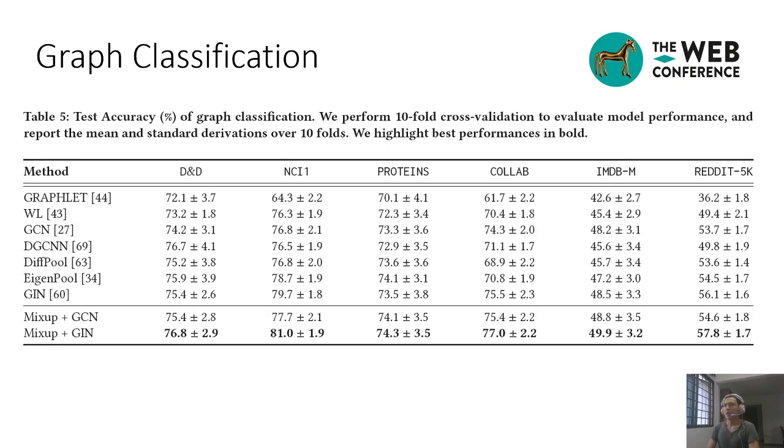For graph classification, we follow existing work to use the cross-validation scheme for a fair comparison and evaluation. Overall, mixup achieves substantial improvements for GCN and GIN on both the chemical and social datasets. As a result, mixup enhances GCN and GIN to outperform all the baseline methods.